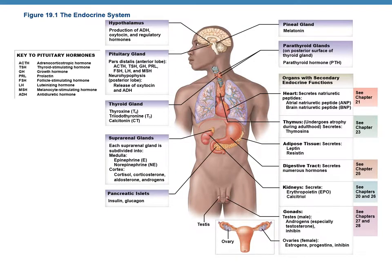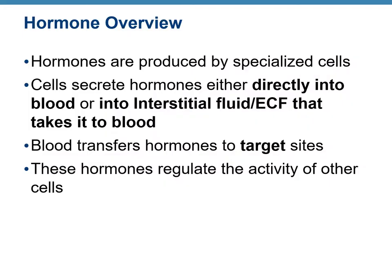This figure shows the major and minor endocrine glands along with the hormones secreted by them. Once you are done with this lecture, I would recommend that you hide the labels with your hands and try to answer what is what. The endocrine cells produce hormones secreted either directly into blood or into the interstitial fluid, which eventually takes it to blood. Blood carries the hormones to their target sites, and hormones are highly specific.